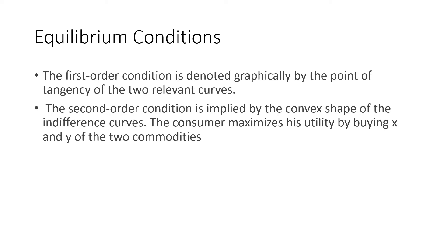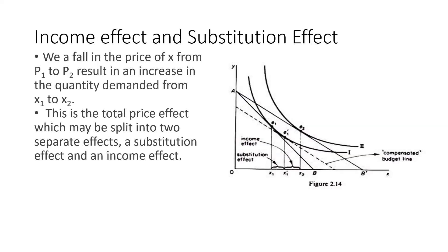The first order condition for equilibrium is the point of tangency of the indifference curve and the budget line. The second order condition implies the convexity of the indifference curve, which is due to the diminishing marginal rate of substitution. Since we are on the same indifference curve, when we increase the consumption of one commodity we are forced to reduce the consumption of the other.